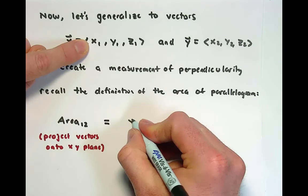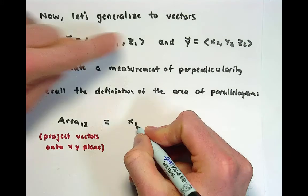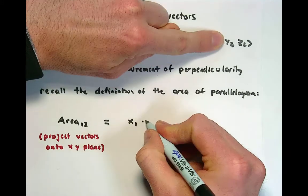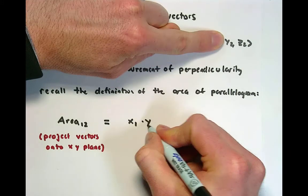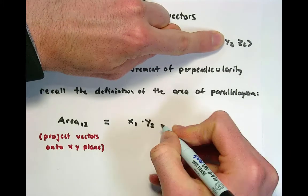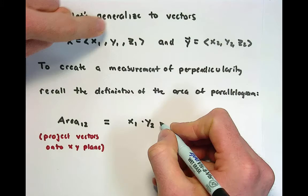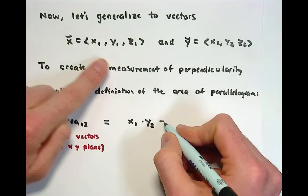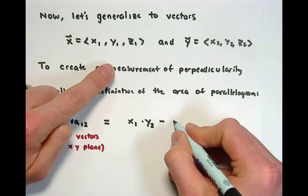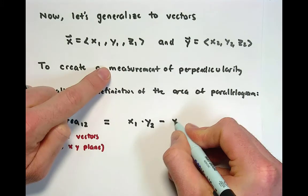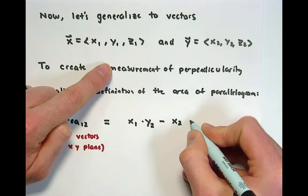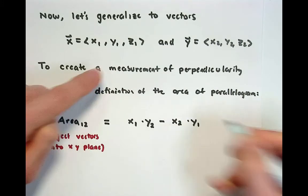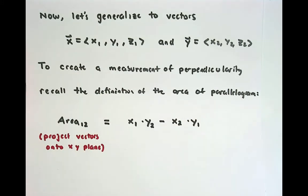And this area would be x1 times y2 — that's the area of the big rectangle — minus x2 times y1.